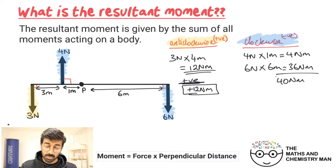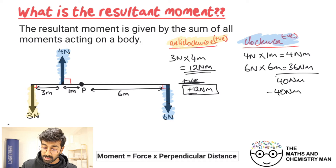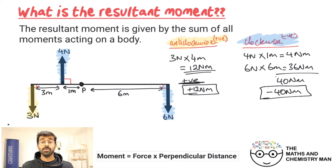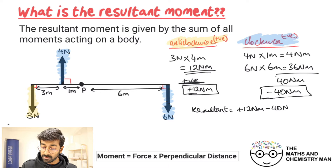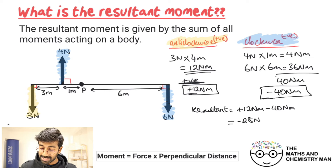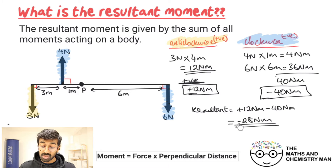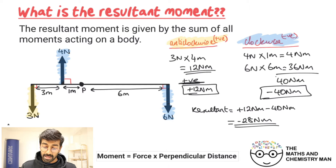For the clockwise direction we use a negative sign, so that's minus 40 Newton meters. To calculate our resultant moment, we add them together: positive 12 Newton meters plus negative 40 Newton meters gives us negative 28 Newton meters. This means the body turns in the negative, i.e. clockwise, direction, with a resultant moment of 28 Newton meters.